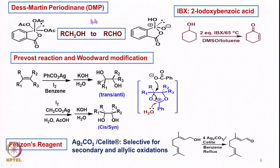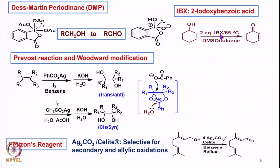Then we saw Dess-Martin periodinane-based oxidations and also IBX (2-iodoxybenzoic acid)-based oxidations, where these reagents convert alcohol to ketone or enone. If we use 2 equivalents of IBX, we get the corresponding enone: the first equivalent converts alcohol to ketone and the second leads to the enone. In the case of Dess-Martin, we convert alcohol to aldehyde; both reagents convert alcohol to aldehyde, but IBX converts further to the enone if more than one equivalent is used.